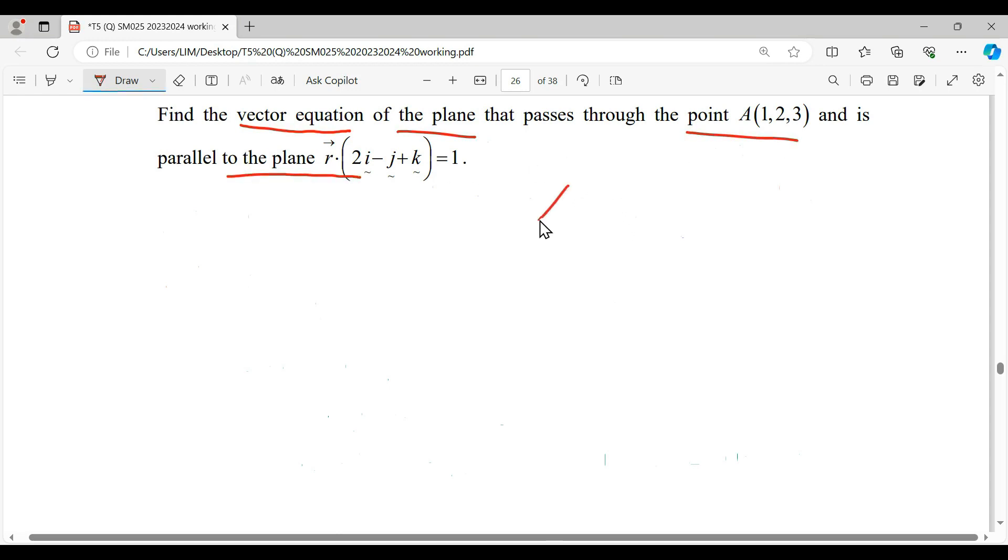So this is the plane that we want to find. It passes through the point A(1, 2, 3). At the same time it is parallel—parallel means same gradient—as another plane which is R·(2i - j + k) = 1.